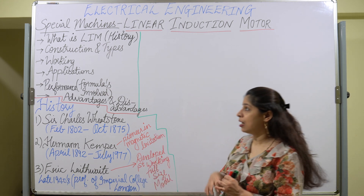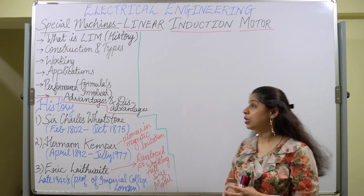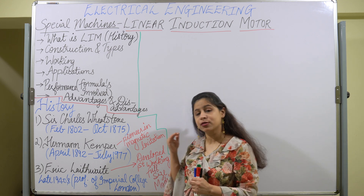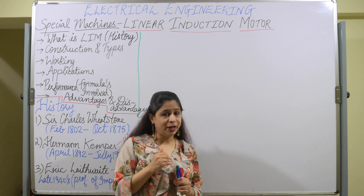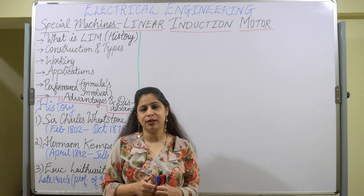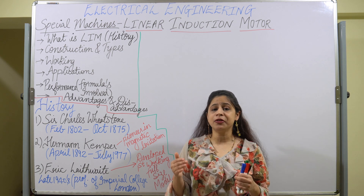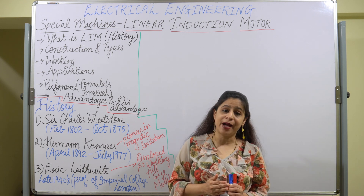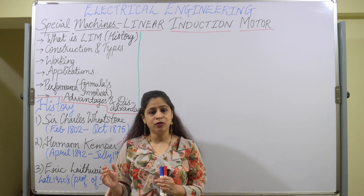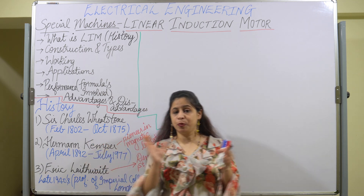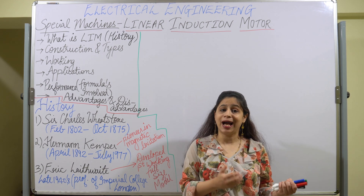Now let us look at the construction and types of the linear induction motor. Constructionally, every motor has two parts — the stator and the rotor. But in the linear induction motor, the stator and rotor are referred to as primary and secondary, respectively. So the stator is referred to as the primary, and the rotor is referred to as the secondary.